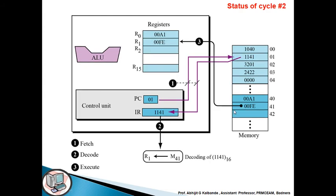Then status for cycle two. Fetch, decode, execute. Then 1141, and next the program counter will be incremented. IR will be 41, 0FE.